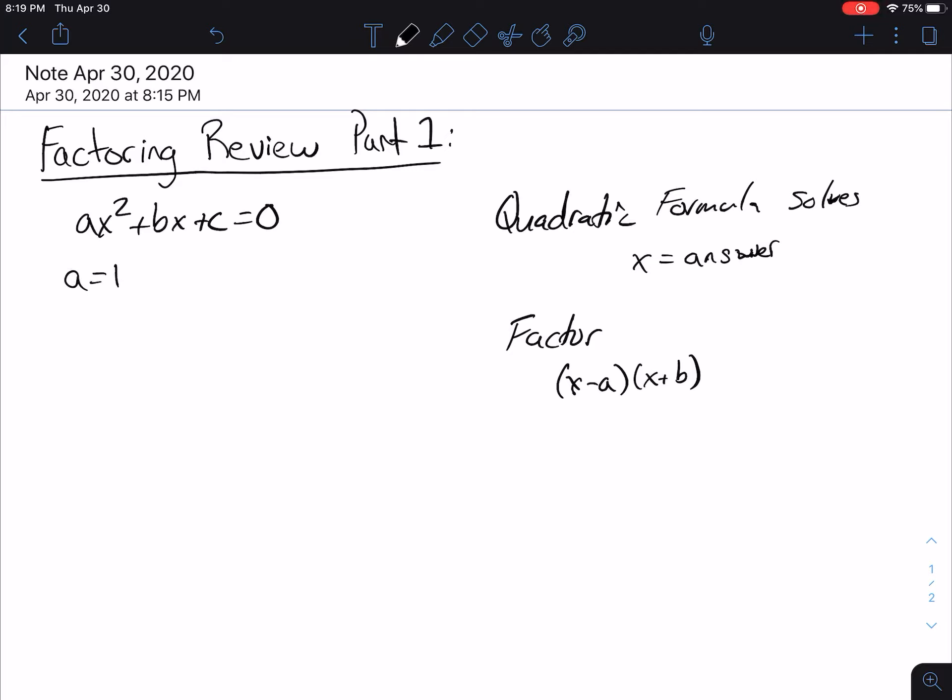Now, we said that a is going to be equal to 1, meaning that we're going to look at factoring things like x squared plus 6x plus 9. And if you remember, we had a very specific way to do this using the calculator.